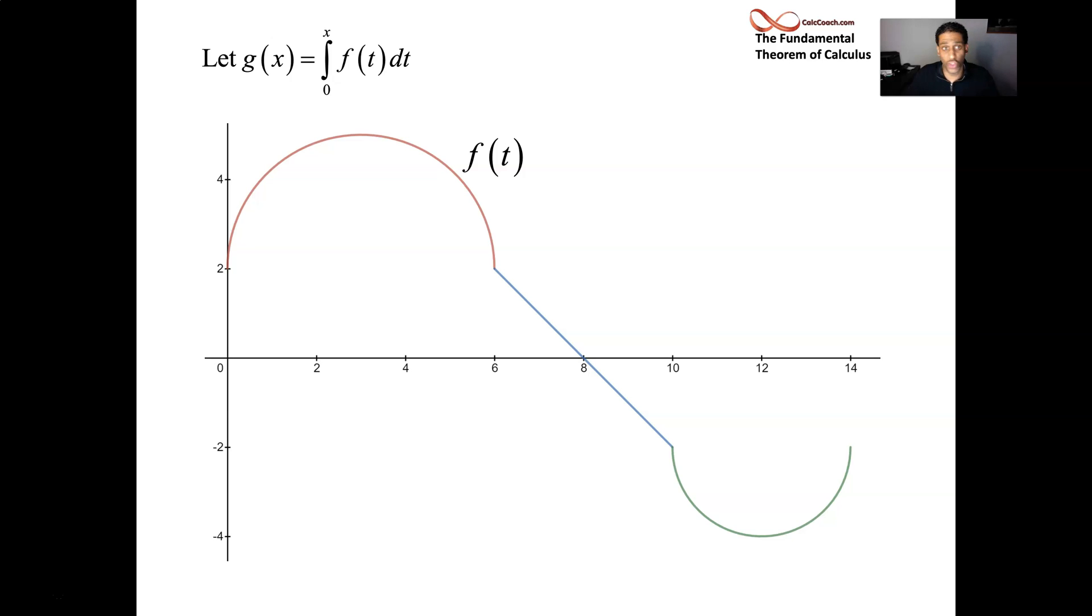And what g of x does is it accumulates area under f of t. So it starts at 0. So it starts exactly at the y-axis. And we can plug in x equals 2. It would be the area from 0 to 2. x equals 4, x equals 6. We can plug in different values and figure out how to evaluate this function g who is accumulating area under f.